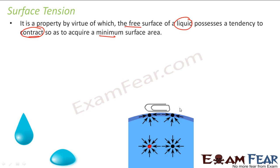There is no force from above on the surface molecule, so there is a tension on it. Every molecule in the surface layer wants to come down. There is a tension created on the surface, and this tension creates a film-like layer on the liquid surface.